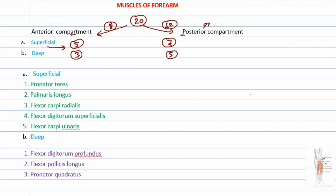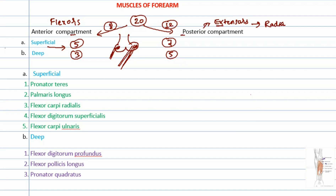The posterior compartment muscles are also known as extensors, and the anterior compartment muscles are also known as flexors. Regarding their origin, the humerus has a lateral epicondyle and a medial epicondyle. Flexor muscles originate from the medial epicondyle — the common flexor origin — while extensor muscles originate from the lateral epicondyle. Extensor muscles are predominantly supplied by the radial nerve, whereas flexor muscles are supplied by the median and ulnar nerves.